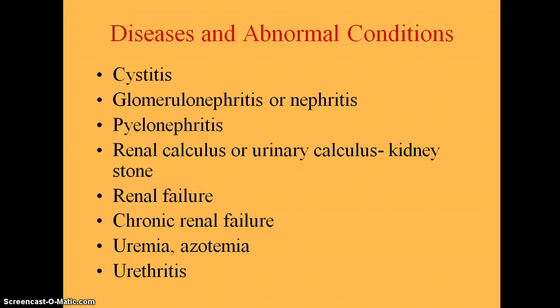With prompt treatment — dialysis and fluid restriction — acute renal failure might correct itself with a good prognosis. However, chronic renal failure results from a progressive loss of kidney function. It could be caused by chronic kidney infection, glomerulonephritis, hypertension, an endocrine disease like diabetes, or long-term substance abuse or alcoholism. What happens is waste products accumulate in the blood because they aren't being filtered through the kidneys, and they affect the different body systems.